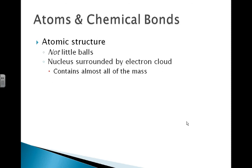As we saw before, atomic structure, where the structure of atoms are not simply just these little balls. We know that there is a nucleus, and that nucleus is surrounded by an electron cloud. The nucleus contains almost all of the mass, because the protons and the neutrons reside there, and the electrons don't have very much mass at all.